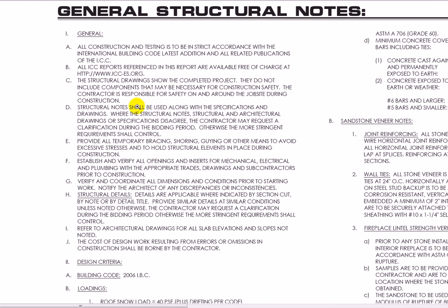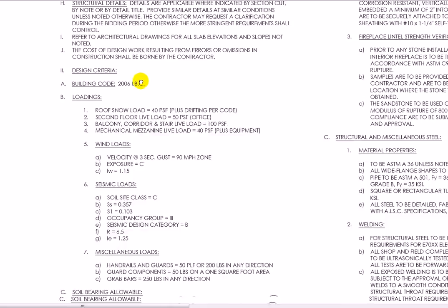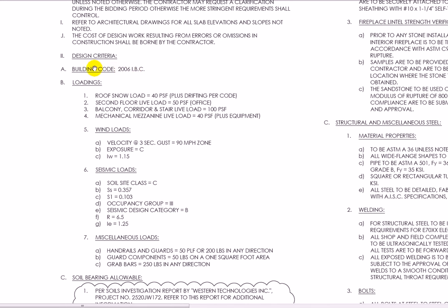The first part is pretty much boilerplate. But as we move down, what we can see here is the building design criteria. So we know the building was done using the 2006 IBC. Typically on structural drawings it's required to show all the loadings used for design. This is because sometimes there are items that are performance specified, such as curtain walls that the contractors need to know what to design for. So this is all the information about the loads used in the building.